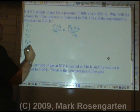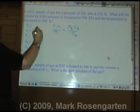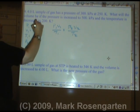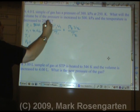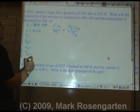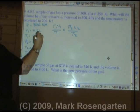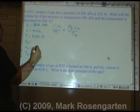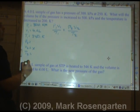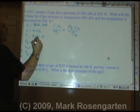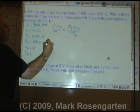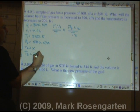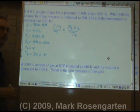Now a combined gas law problem: P1V1/T1 = P2V2/T2. A 4.0 liter sample of gas has a pressure of 300 kilopascals at a temperature of 250 Kelvin. What will the volume be if the pressure is increased to 500 kilopascals and the temperature is decreased to 200 Kelvin?